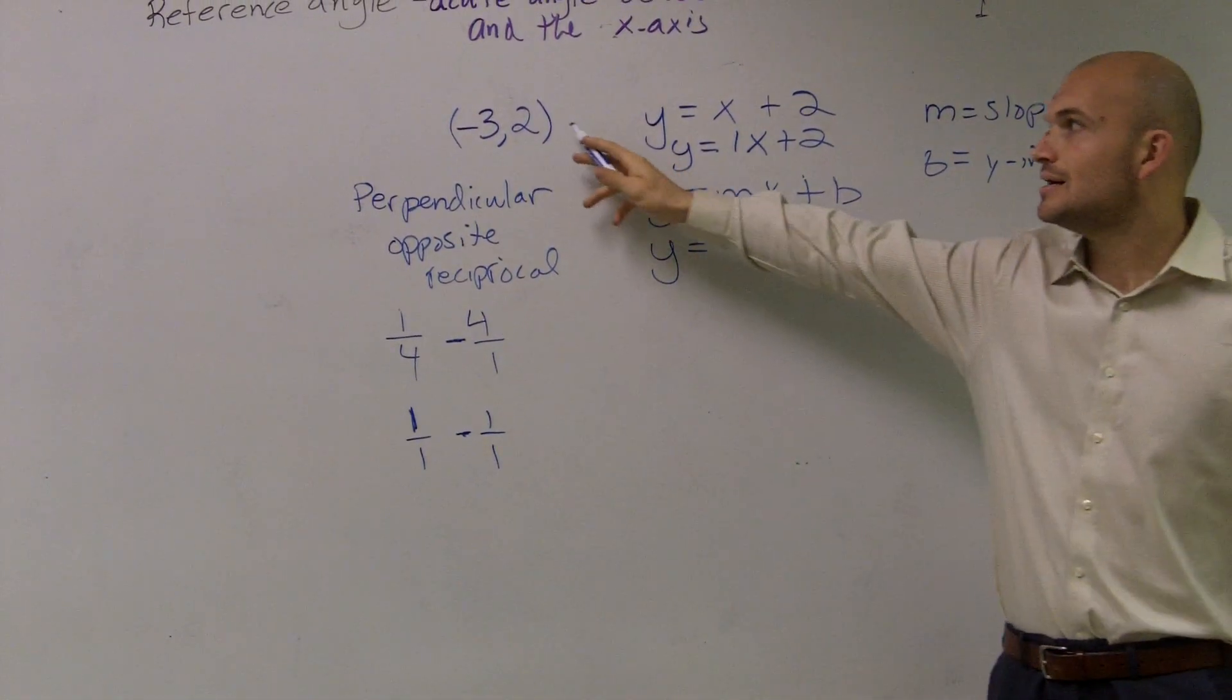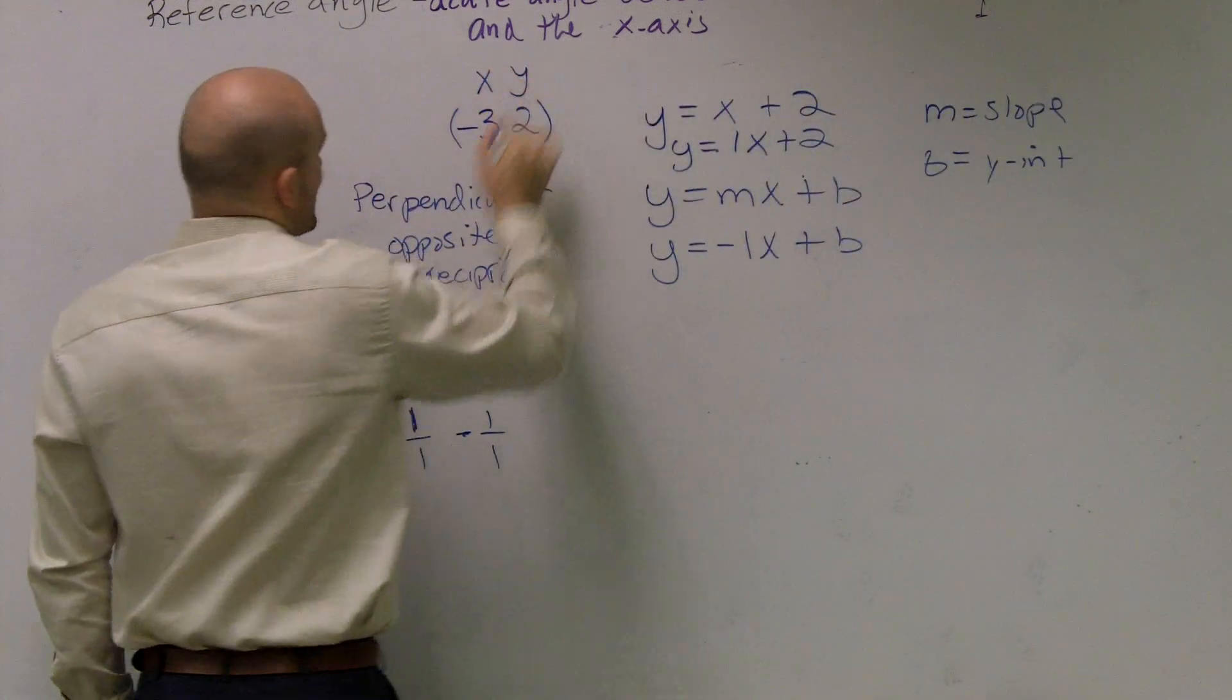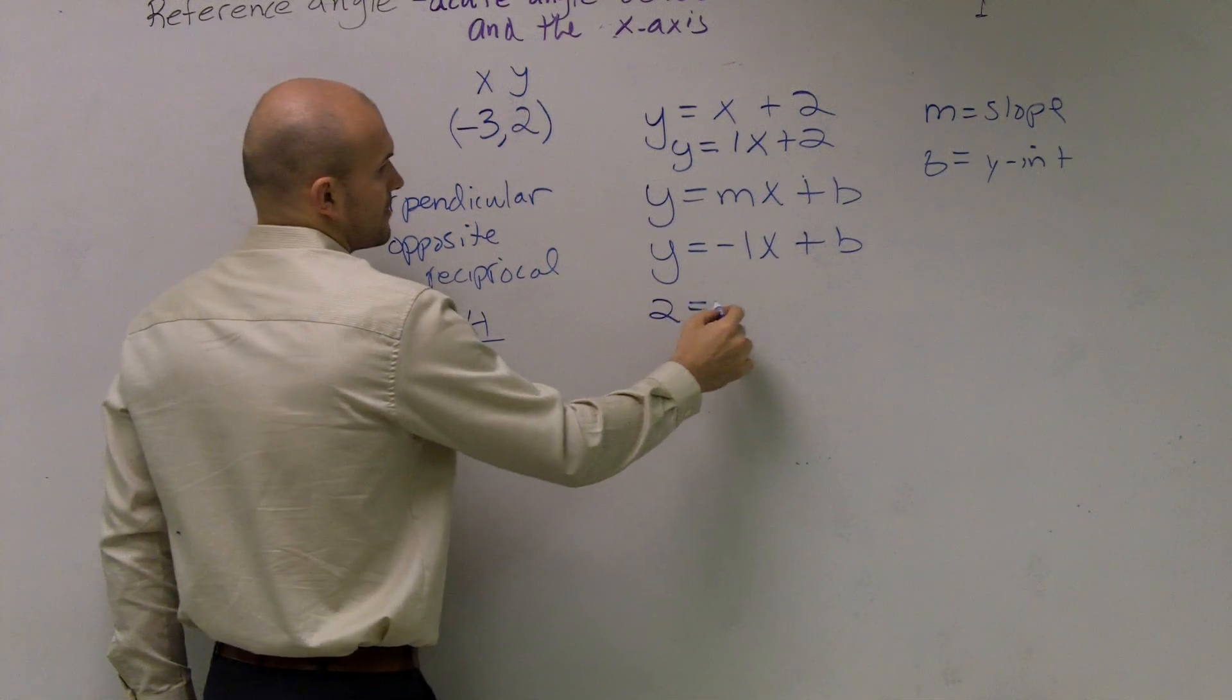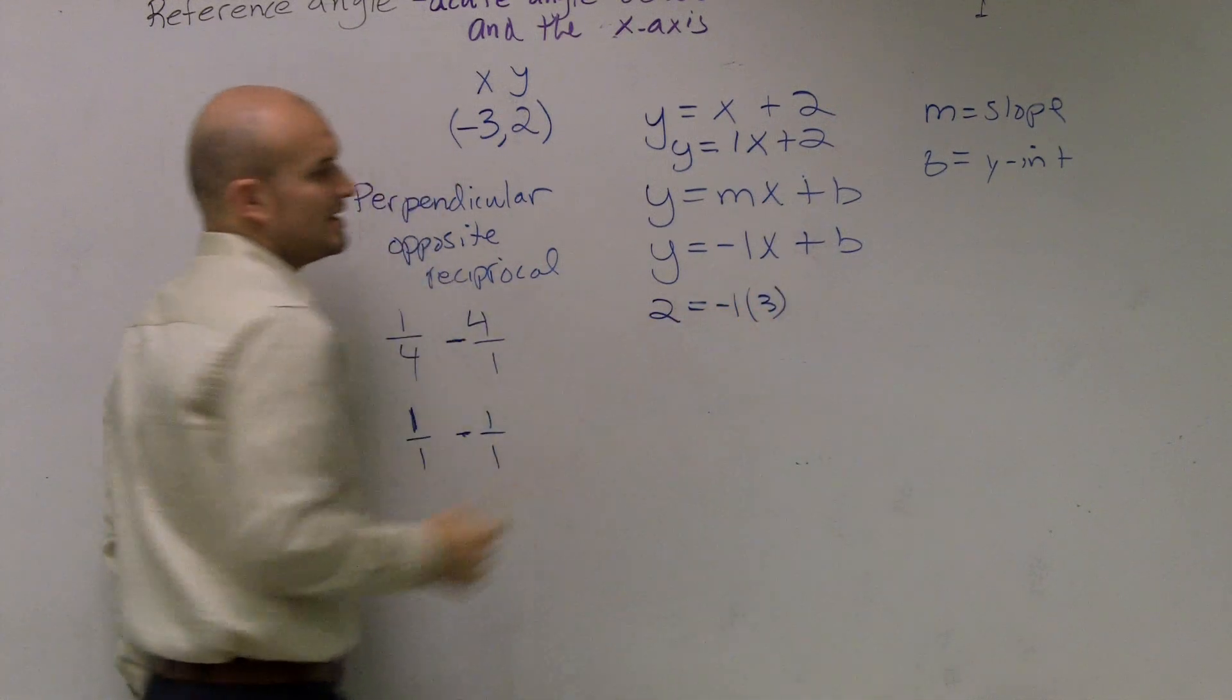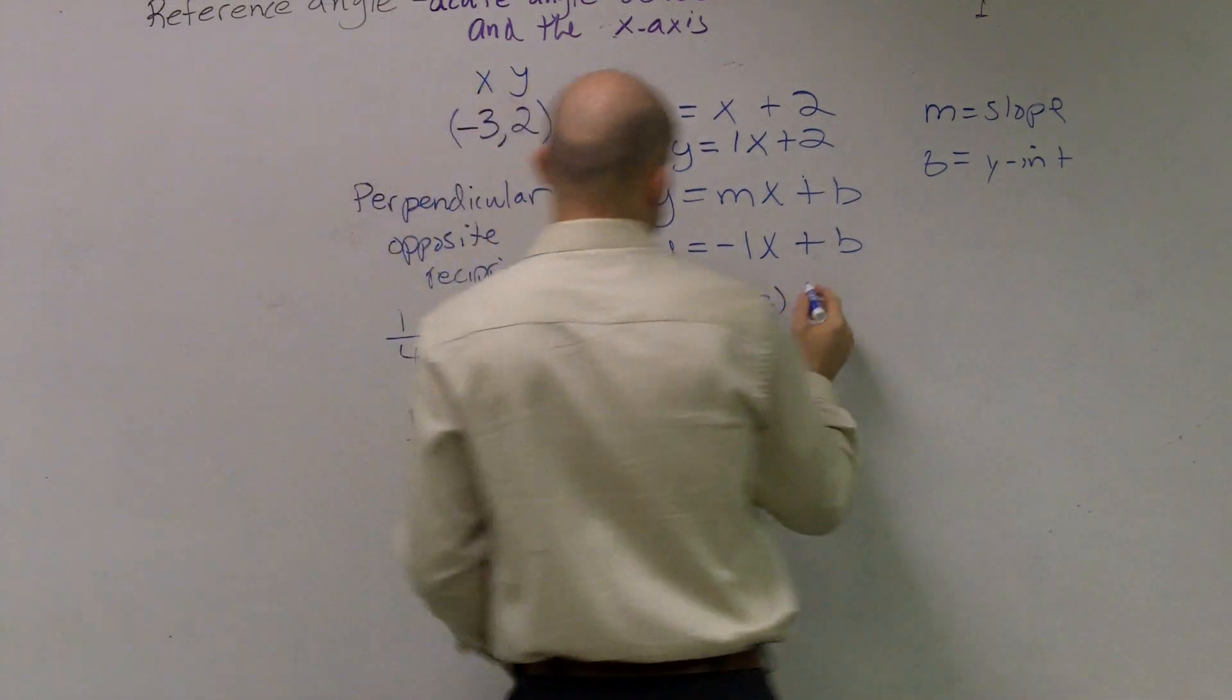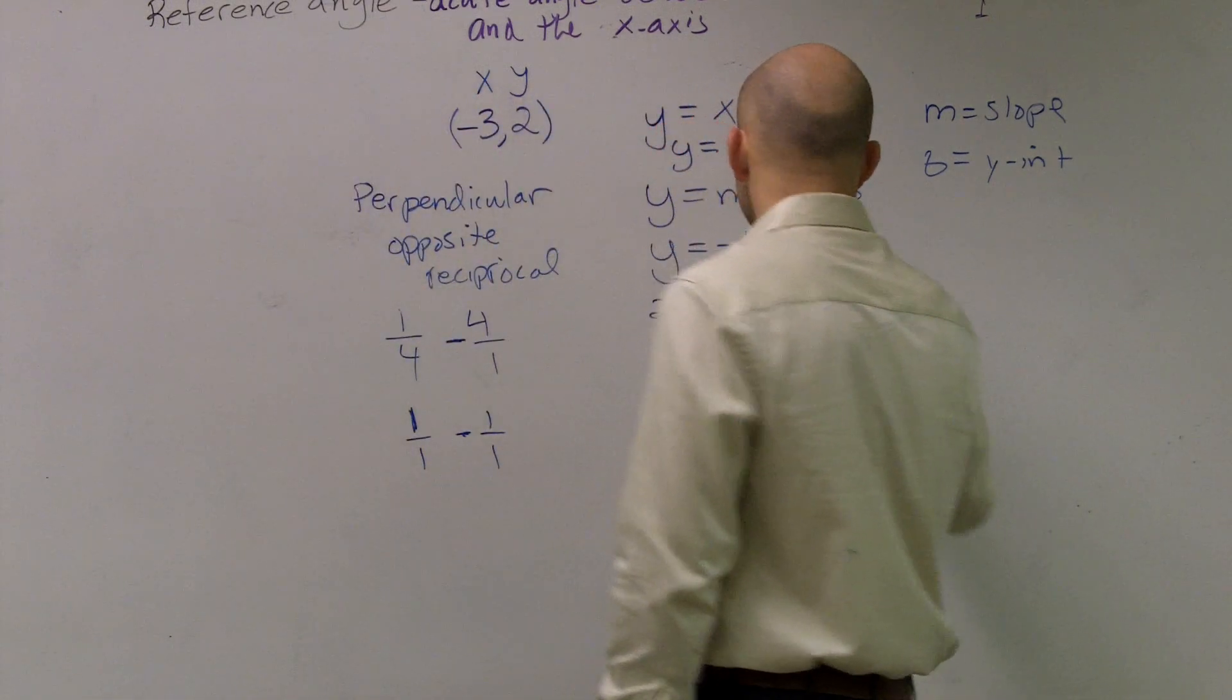So to do that, I can say, well, every point has an x and a y coordinate. So I'll plug in two for y and negative three for x. Negative three, thank you. Plus b.